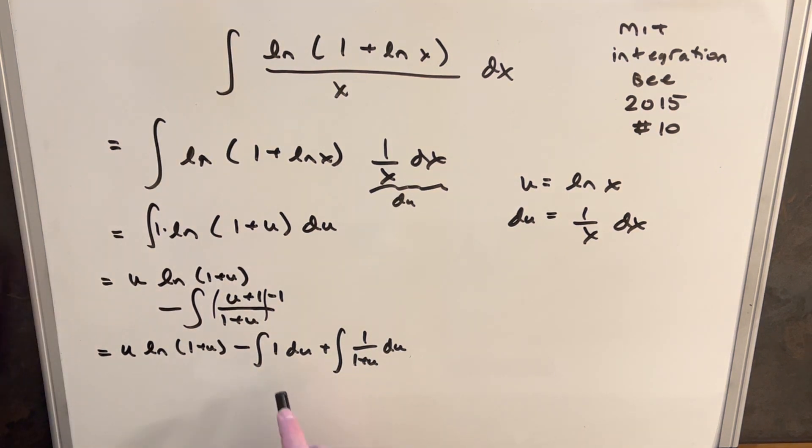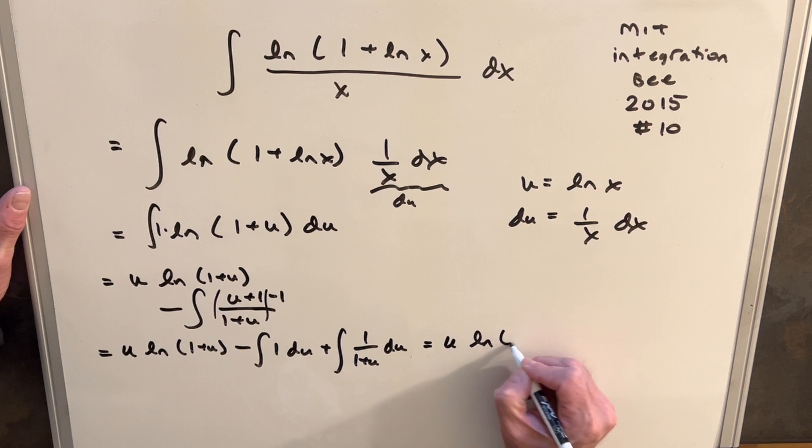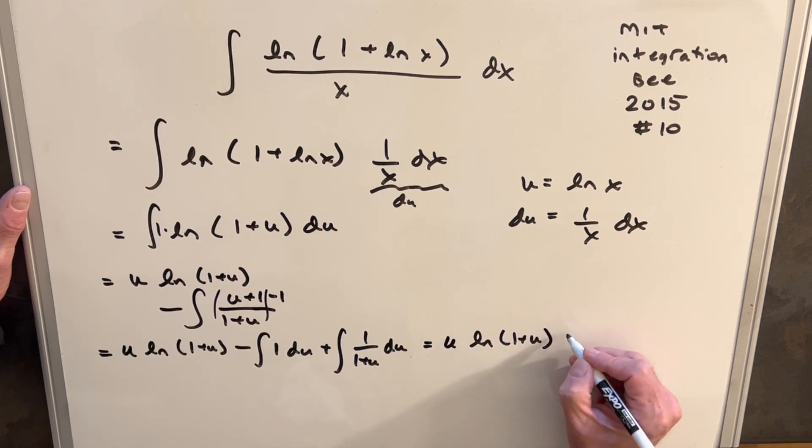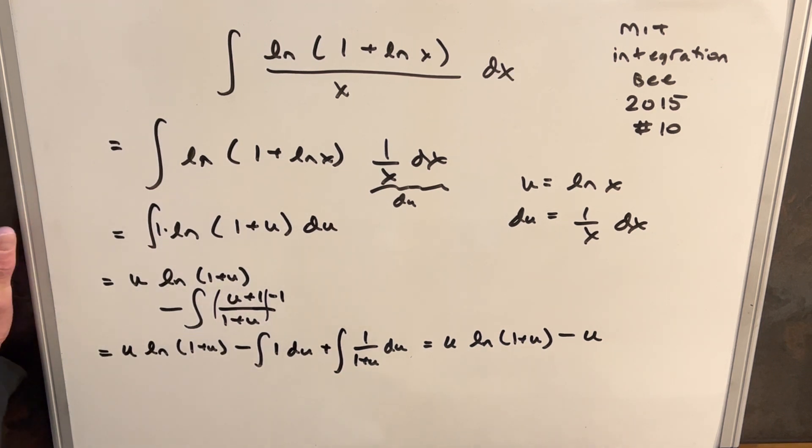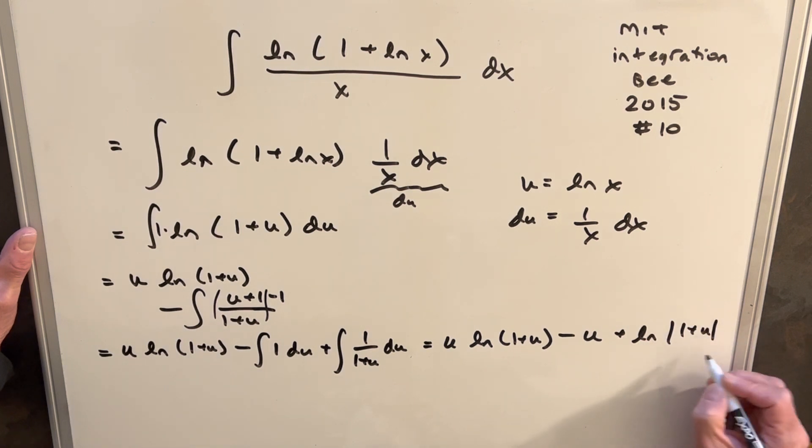And so you notice where we have it now, that each of these integrals is really simple. So let's just do these out. So we're going to have u ln 1 plus u minus integral of 1 is just u, plus the integral of this is just going to be ln 1 plus u. So we'll have ln, 1 plus u.